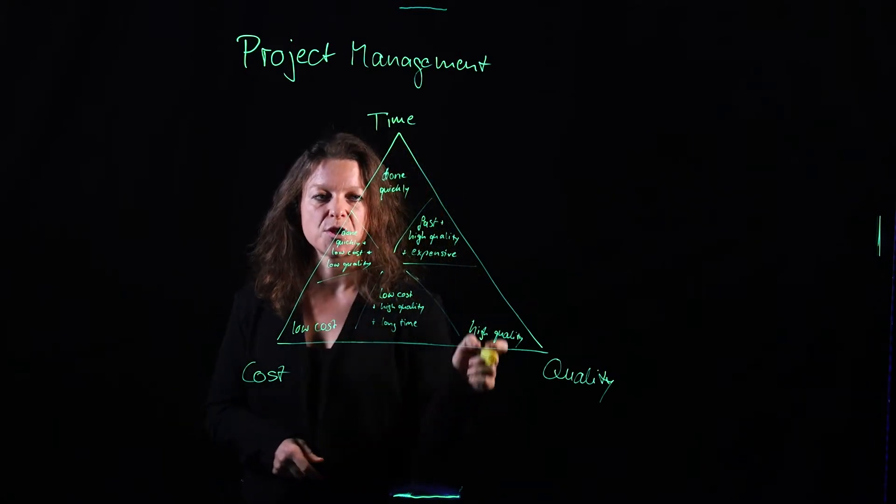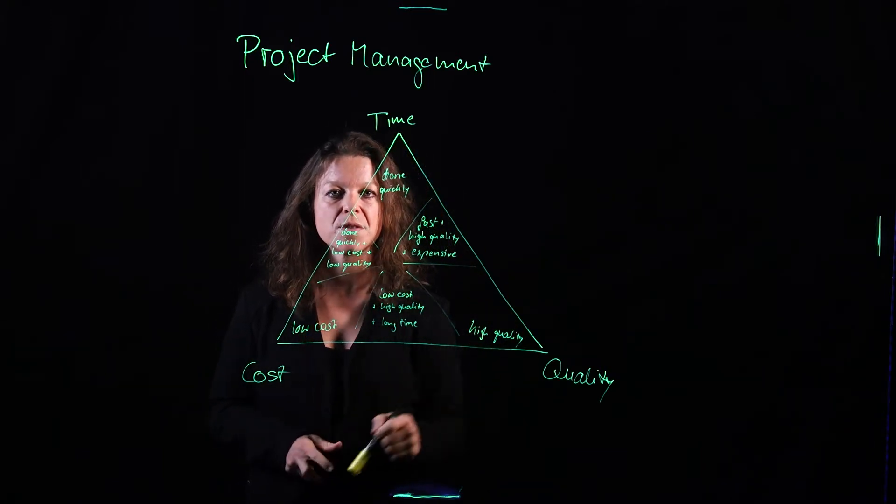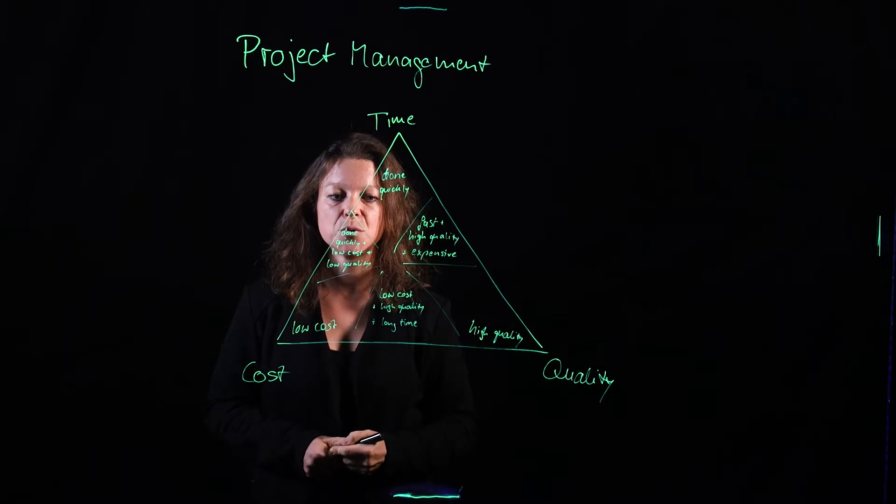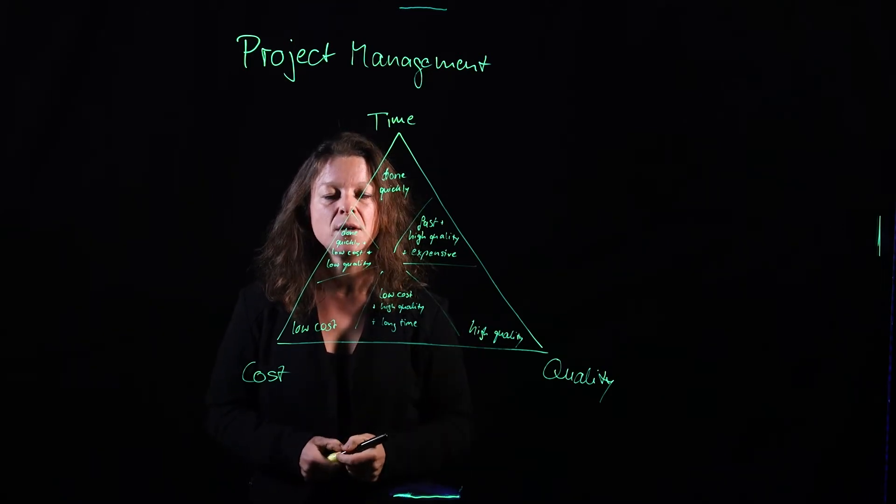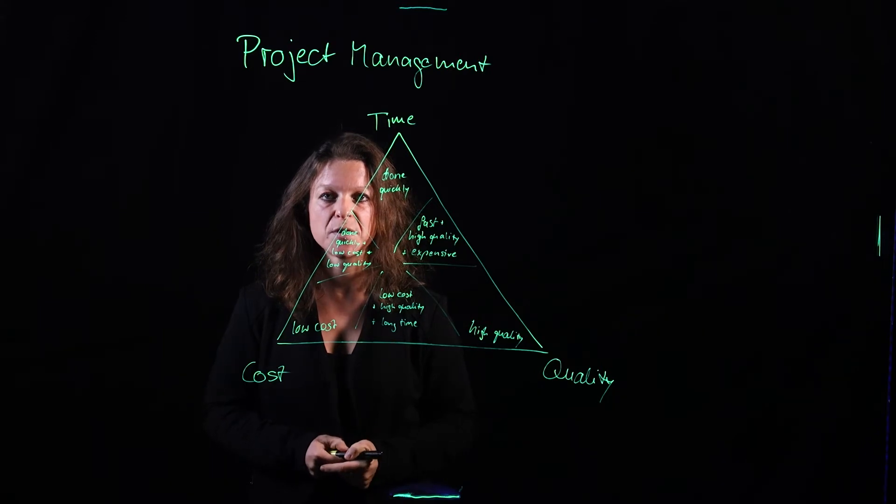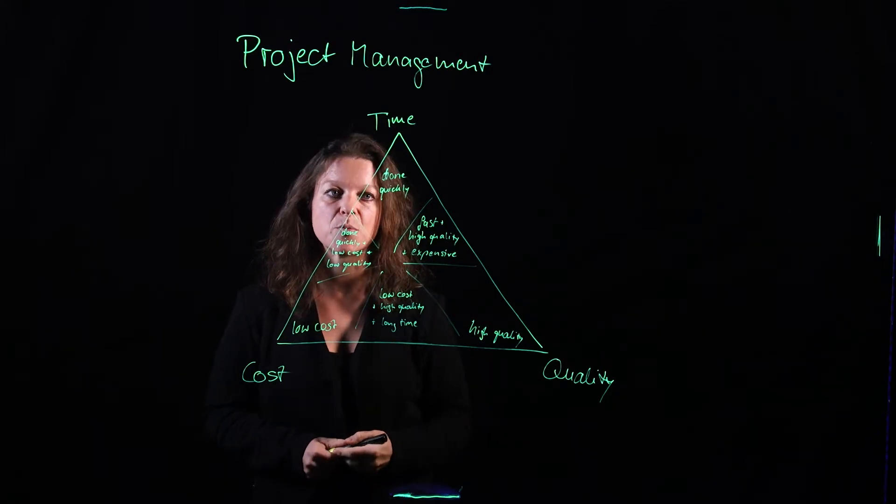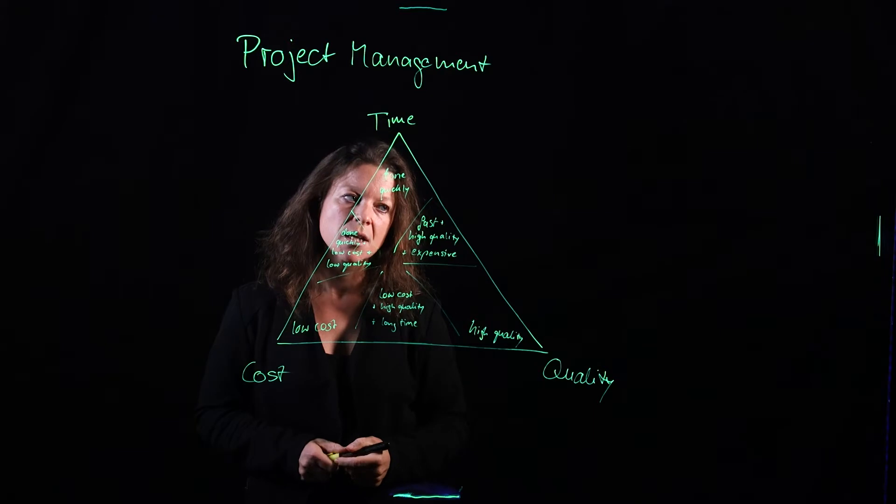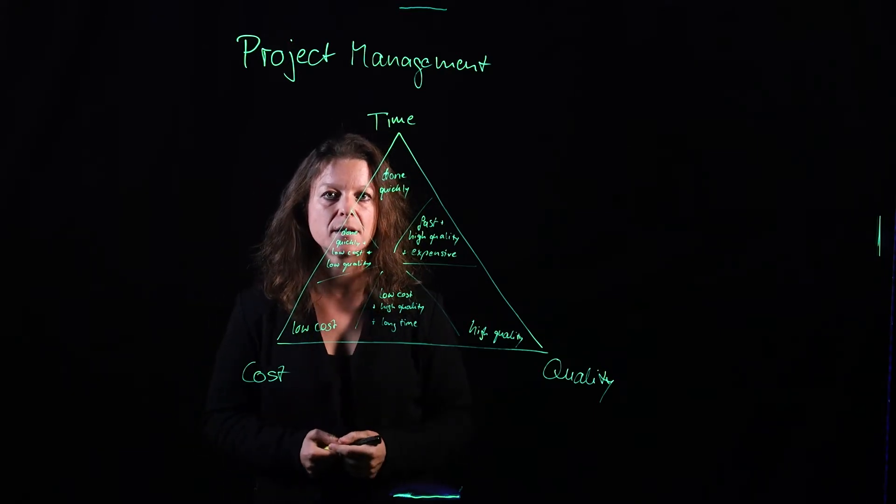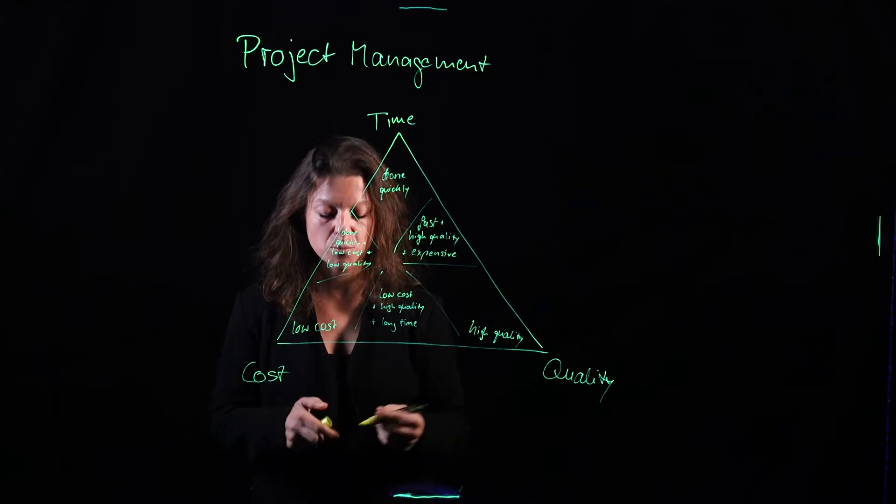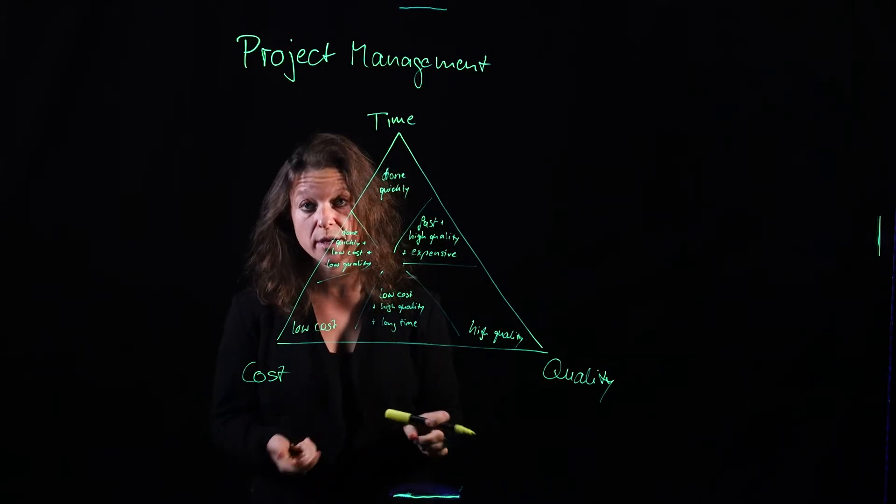And so for any project situation that you come up with, you will always have to find the balance in between those three. And once you have that part figured out, you can plan out your project using either a Gantt chart tool or something like a board, a Trello board or a Kanban board.